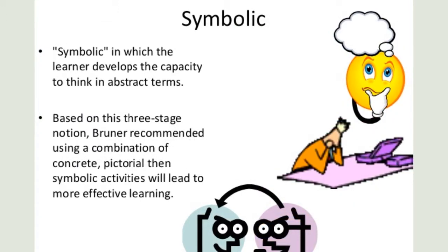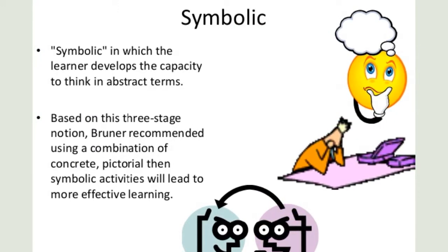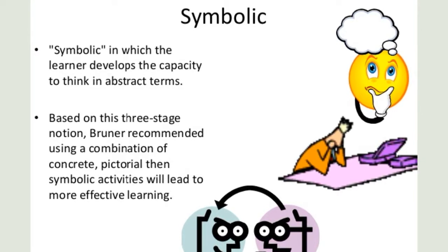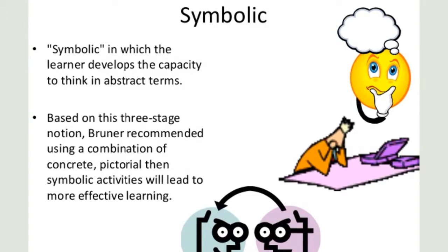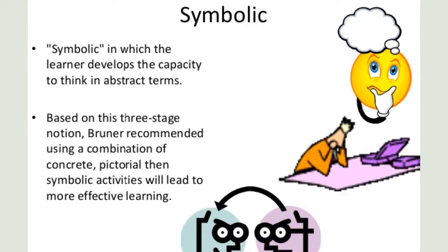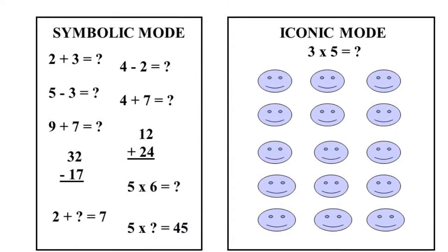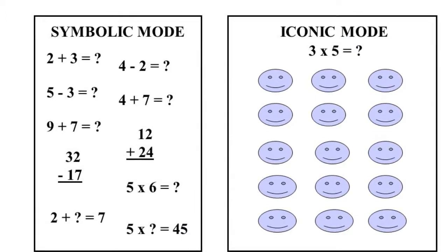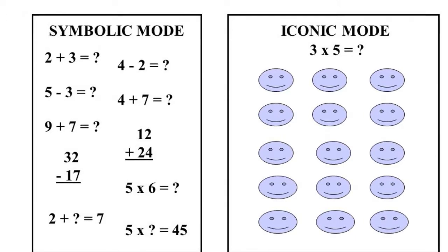The symbolic mode of representation develops last. This is where information is stored in the form of a code or symbol. In the symbolic stage, knowledge is stored primarily as words, mathematical symbols, or in other symbol systems. This is an example of how one would learn math in the iconic stage versus the symbolic stage.